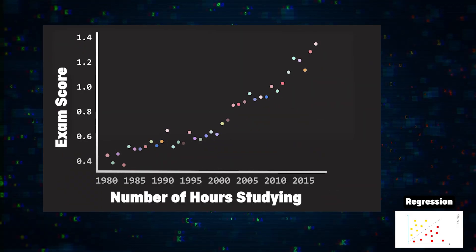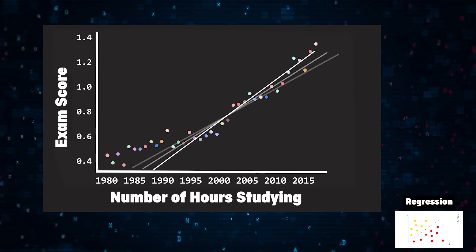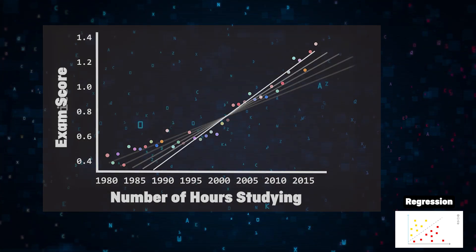The more time spent studying usually results in better results. A linear regression model can capture this correlation and trend by representing the connection between two variables, such as the input, which is the number of hours studied, and the output, which is the score on the test.